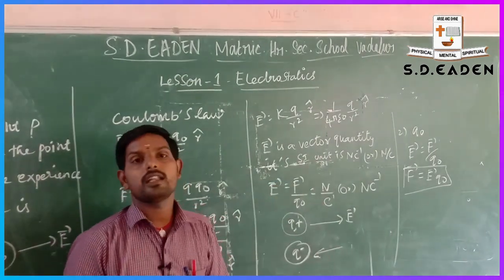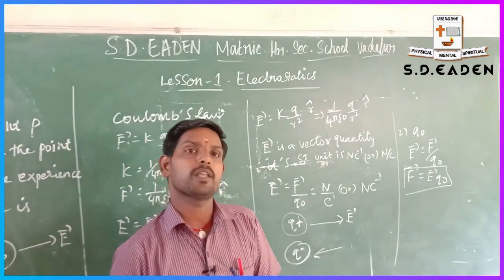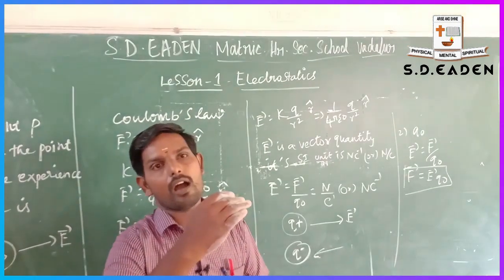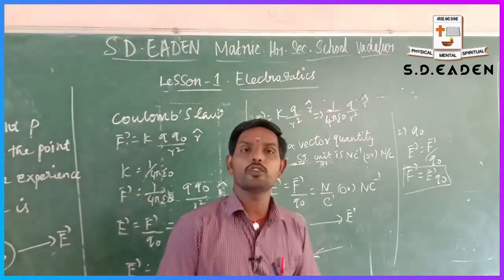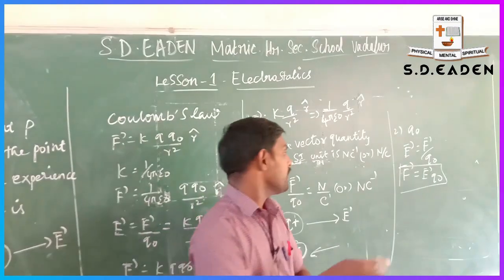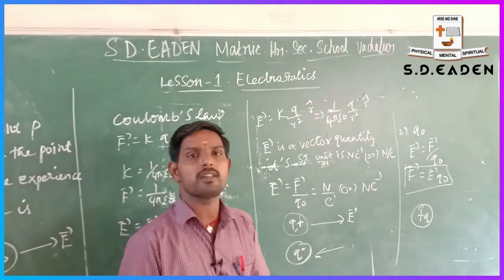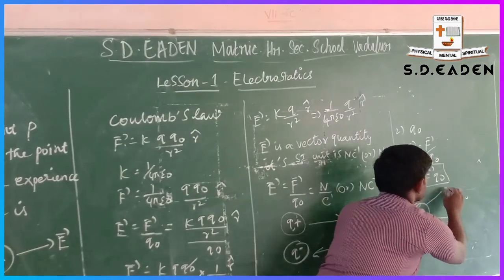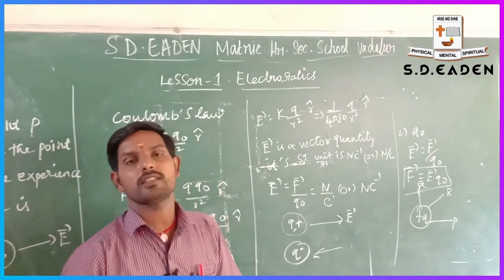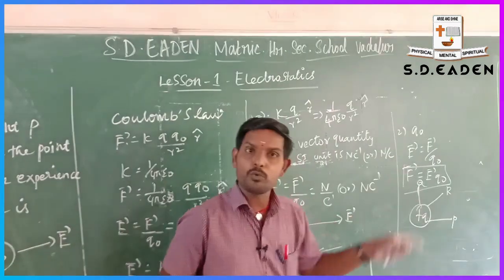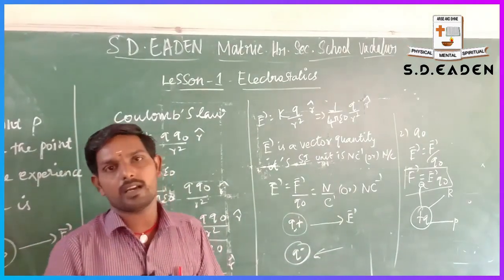The fourth aspect: the electric field is a vector quantity because it has a unique direction and constant magnitude. When distance increases, the electric field decreases. Considering three points P, Q, and R at different distances from a positive charge q1, point P is closest to the charge compared to Q and R, so the electric field is strongest at P. This is the fourth aspect.